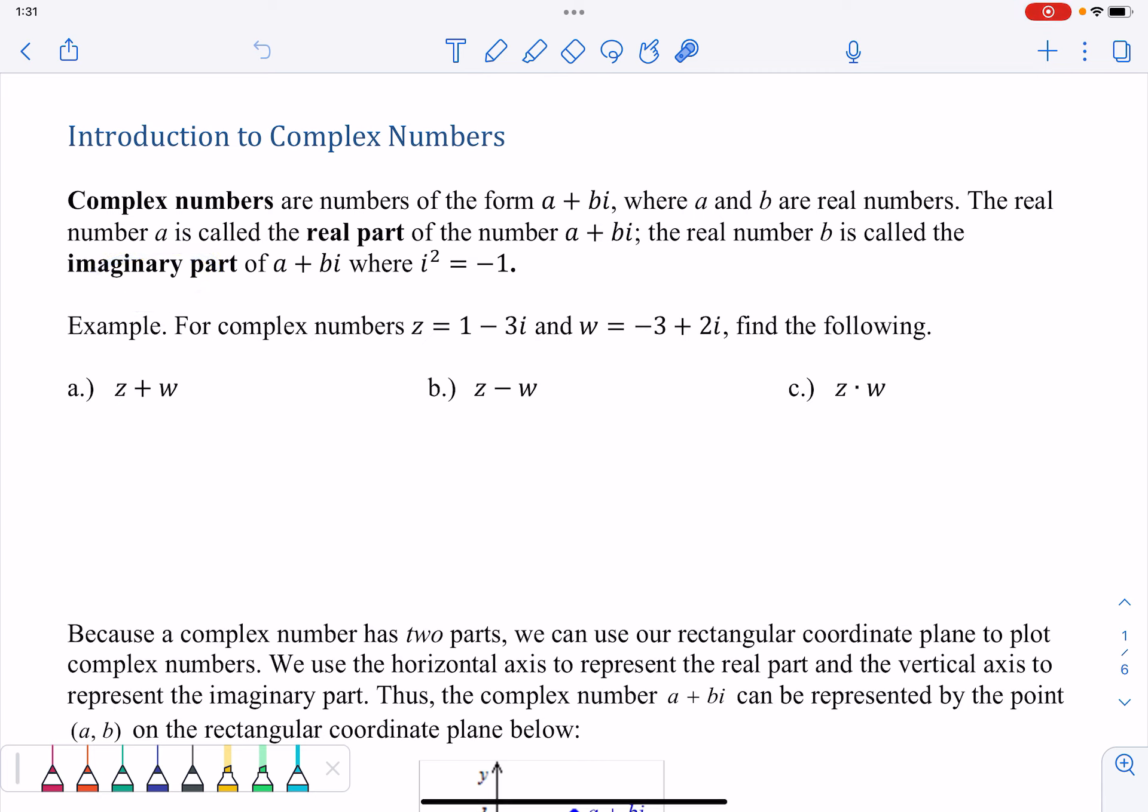Since a real number can't be squared to equal a negative number, we think of I as an imaginary number because it has this new property.